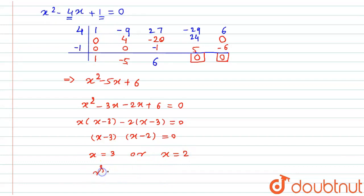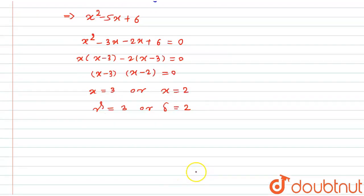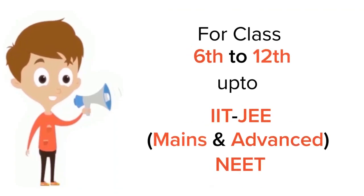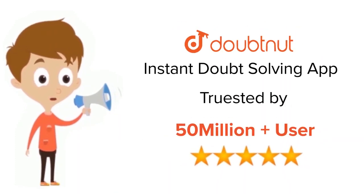We have found the third and fourth roots: gamma = 3 and delta = 2. Finally, the four roots of the polynomial f(x) are: 2 - √3, 2 + √3, 3, and 2. This is the required solution for this question. For class 6 to 12, IIT-JEE and NEET level, trusted by more than 5 crore students — download the DoubtNet app today.